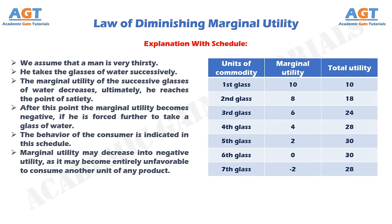Let's explain the law of diminishing marginal utility with a schedule and example. We assume that a man is very thirsty. He takes glasses of water successively. The marginal utility of the successive glasses of water decreases; ultimately, he reaches the point of satiety. After this point the marginal utility becomes negative if he is forced to take another glass of water. The behavior of the consumer is indicated in this schedule table. Marginal utility may decrease into negative utility, as it may become entirely unfavorable to consume another unit of any product.